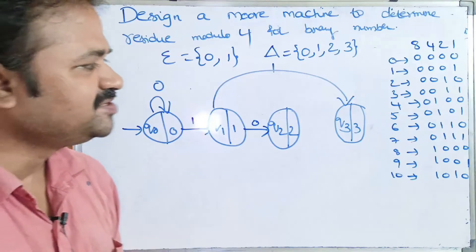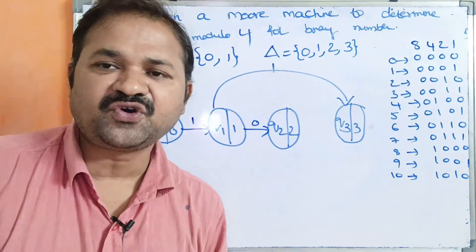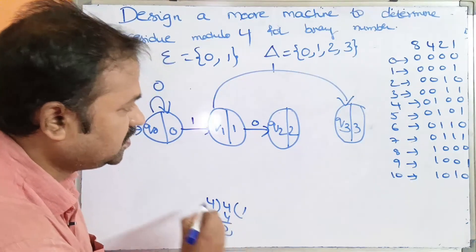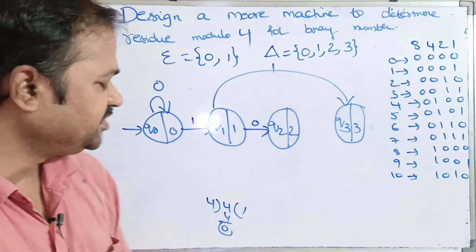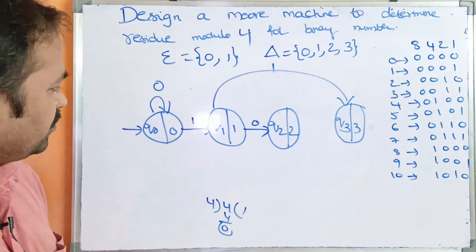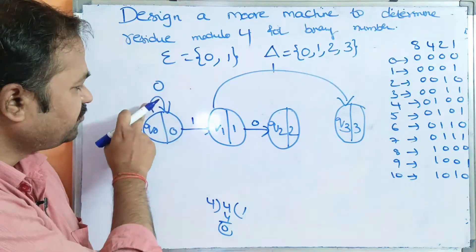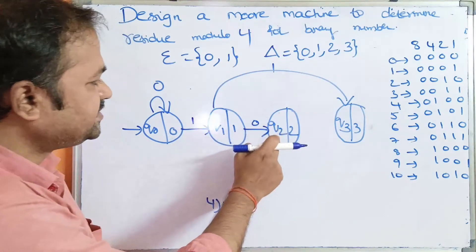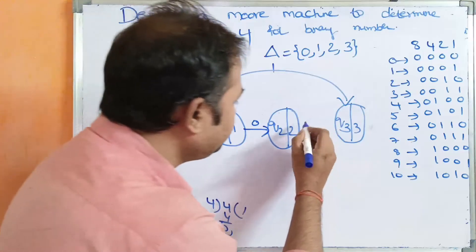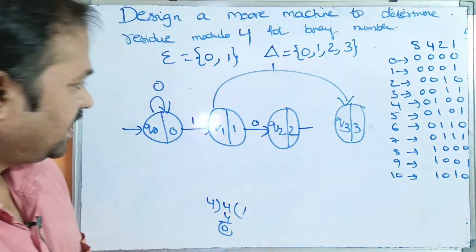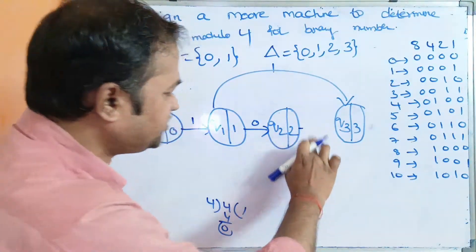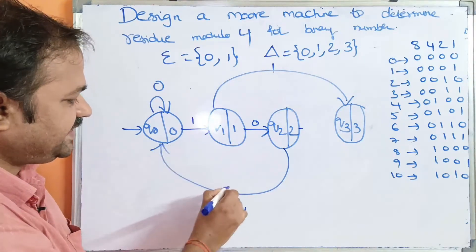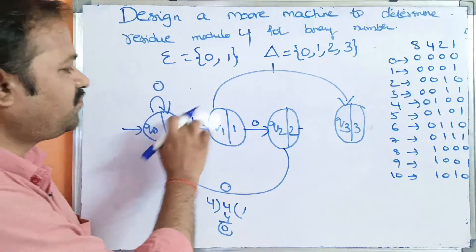Now consider 4, which is 0100 in binary. 4 modulo 4 is 0, so we need to be at Q0. Q0 on 0 goes to Q0, Q0 on 1 goes to Q1, Q1 on 0 goes to Q2, and Q2 on 0 goes to Q0. So we can make this transition.